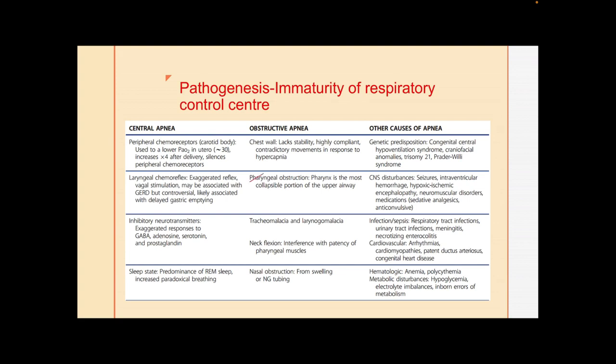There are multiple pathogenic mechanisms. For obstructive apnea: pharyngeal obstruction, the pharynx being the most collapsible part, and neck flexion — this is why it is important to have a shoulder roll under the baby to keep the neck slightly extended. The chest wall is also very compliant and lacks stability. For central apnea there are multiple mechanisms.